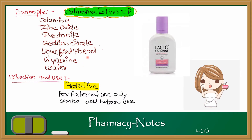Let's look at an example. Calamine lotion is the best example. It contains calamine, zinc oxide, bentonite, sodium citrate, liquefied phenol, glycerin, and water. Calamine is the main protective ingredient. Bentonite acts as a suspending agent; liquefied phenol and sodium citrate act as preservatives; glycerin provides emollient action; and water serves as the vehicle.